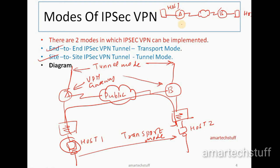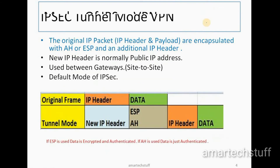To clarify with a simpler diagram: when implementing the tunnel between two VPN gateways, that is tunnel mode. When implementing IPSec VPN between two end hosts, that is transport mode. Tunnel mode is also the default mode of IPSec VPN implementation — always remember that. It is used between gateways.